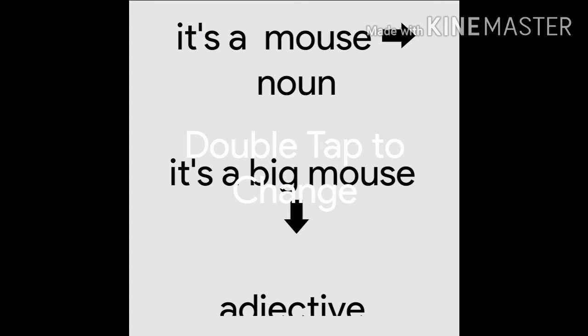For example, it's a mouse. Mouse here is a noun. But when I say it's a big mouse, big here is an adjective but mouse is a noun.